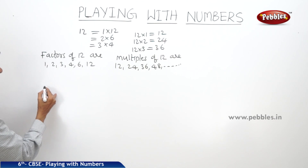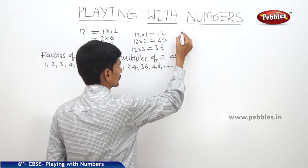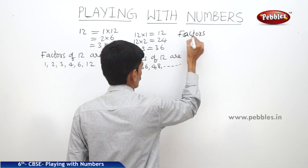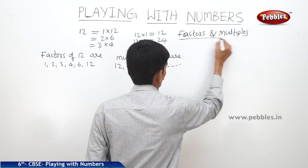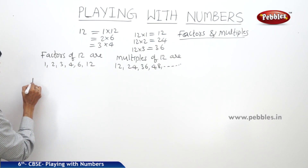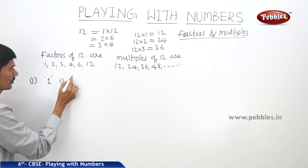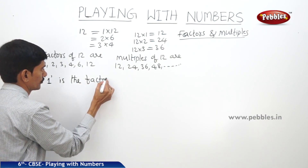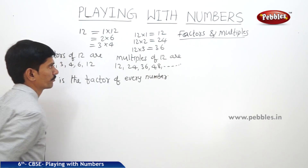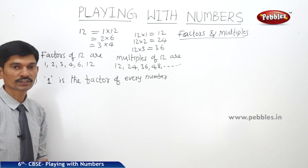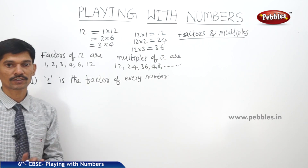Now let us write the properties in case of factors and multiples. The first property is: 1 is a factor of every number. We can observe that 1 is a factor of 12, 1 is a factor of 6, 1 is a factor of 10. So 1 can be considered as the factor of any natural number.